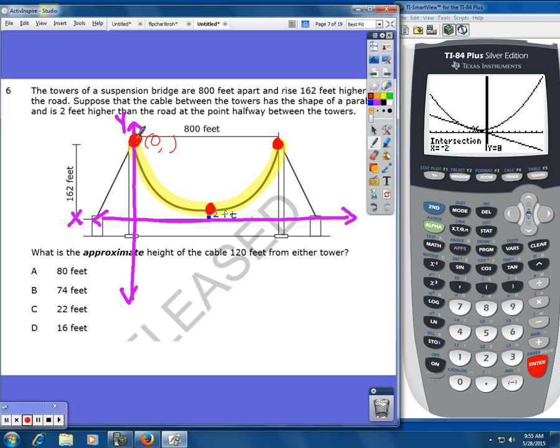And then I know how tall the tower is. It told us in the problem and it's right here. So that's going to be 162. That's my ordered pair for this point.